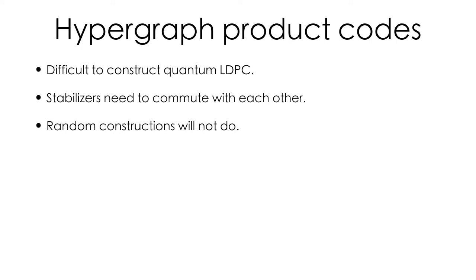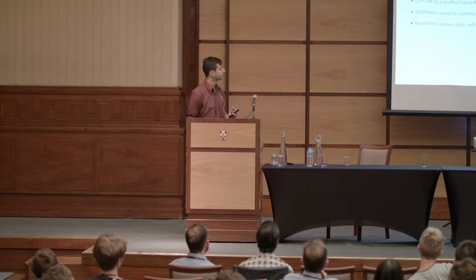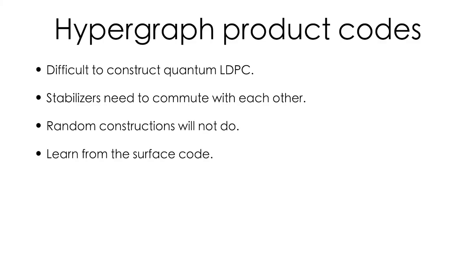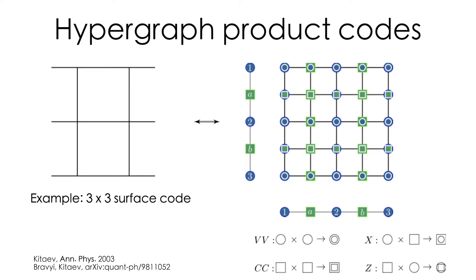Some of the most famous LDPC codes, such as the surface code and the color code, resort to topology. But as pointed out earlier, these codes have some restrictions. Hypergraph product codes, on the other hand, eschew topology in favor of a graph-theoretic or algebraic description, and this is what gives them their power. So let's see how these codes work by considering the surface code as an example. This hypergraph product construction gives you a recipe: given a classical factor graph, it tells you how to get your qubits and checks.